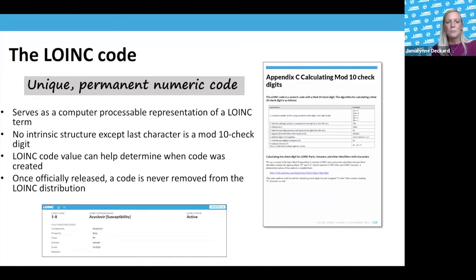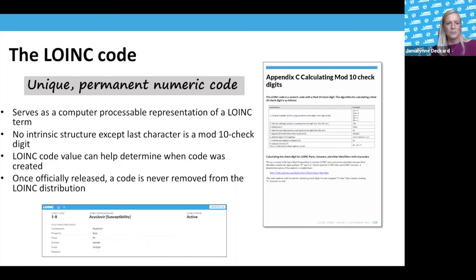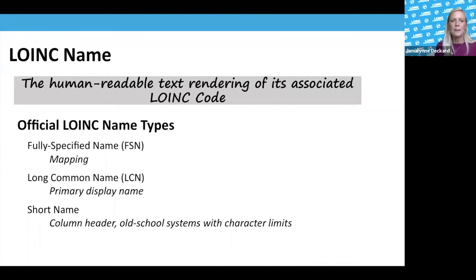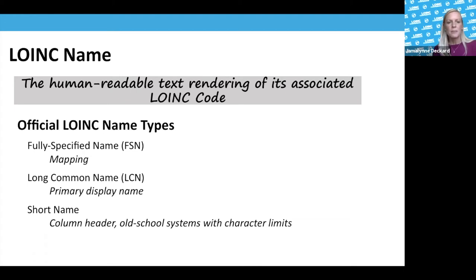The only thing you can determine about a LOINC code is when it was created — older codes have smaller numbers. The code 1-8 was the very first LOINC code created, for Acyclovir, and current codes are in the 90,000s. Once a code is officially released, it is never removed from the LOINC distribution. We have several different LOINC names; the three most commonly used are the fully specified name, the long common name, and the short name.